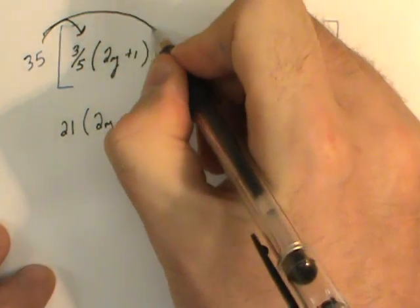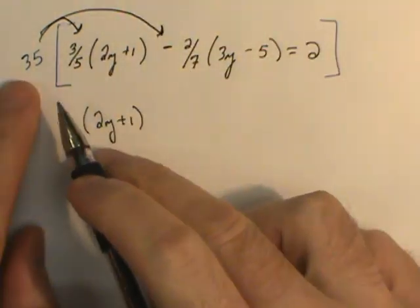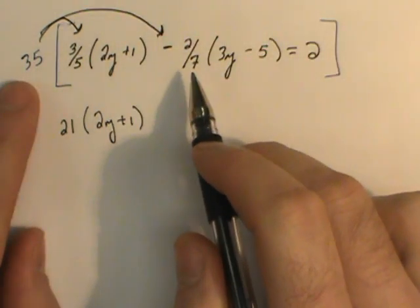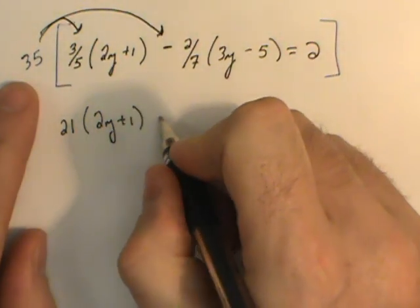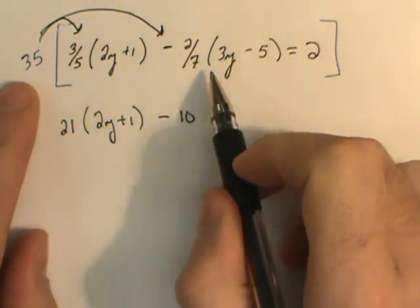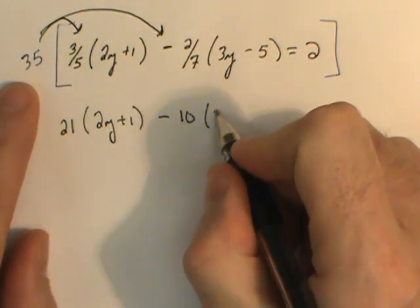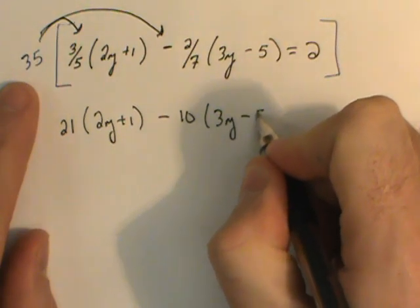In a similar way, as I move to the second fraction, 35 divided by 7 is 5, 5 times negative 2 is negative 10. This set of parentheses is brought down as those terms are protected.